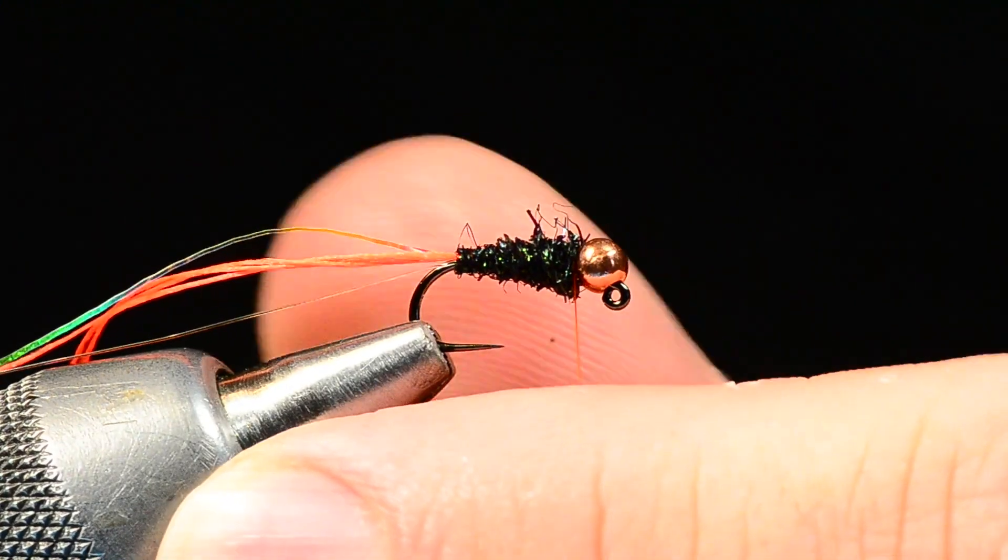Now for the collar on this, this is really a pretty simple fly as you've seen so far. On the collar there's a couple things to watch out for. We're going to use a CDC feather. This is just a natural dun CDC feather. What you want to look for is a feather that's got a thin stem here across the center. We're going to wrap this like a hackle.